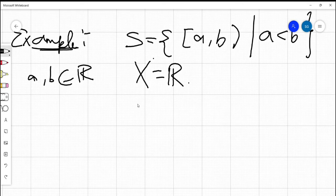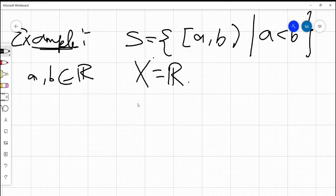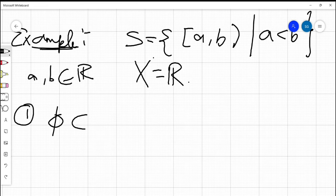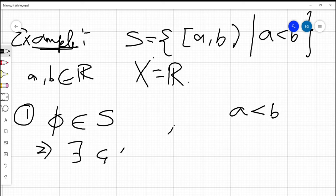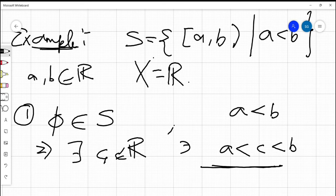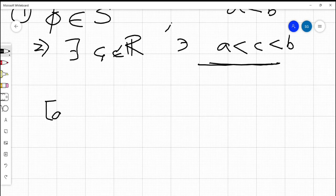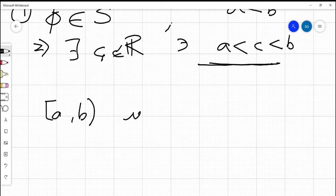Then we need to show that S is a semi-ring. For that, first we need to see if the empty set belongs to S. Now, clearly the empty set does not belong to S because whenever a is strictly less than b, there exists some point c which is a real number such that c sits between a and b. Therefore, it cannot happen that no interval [a, b) is non-empty.